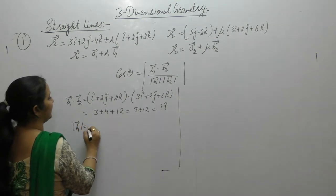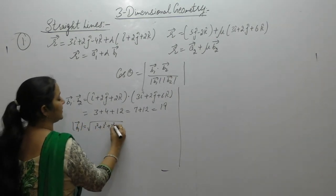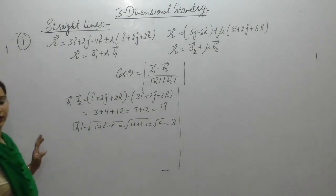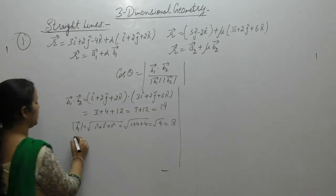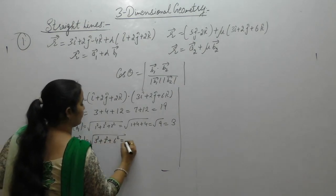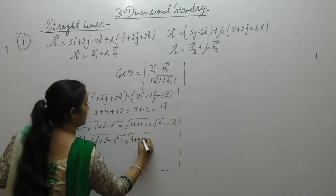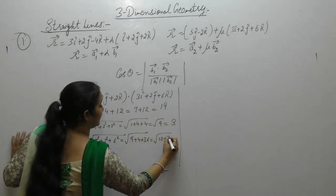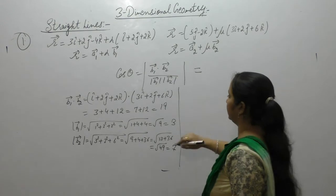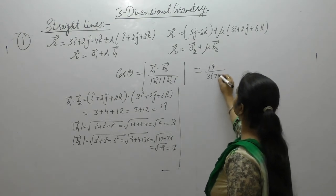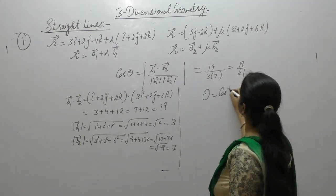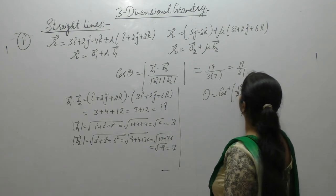Magnitude of b1: sqrt(1² + 2² + 2²) = sqrt(1 + 4 + 4) = sqrt(9) = 3. Magnitude of b2: sqrt(3² + 2² + 6²) = sqrt(9 + 4 + 36) = sqrt(49) = 7. Putting these values in: cos θ = 19/(3×7) = 19/21. So the angle is θ = cos⁻¹(19/21).